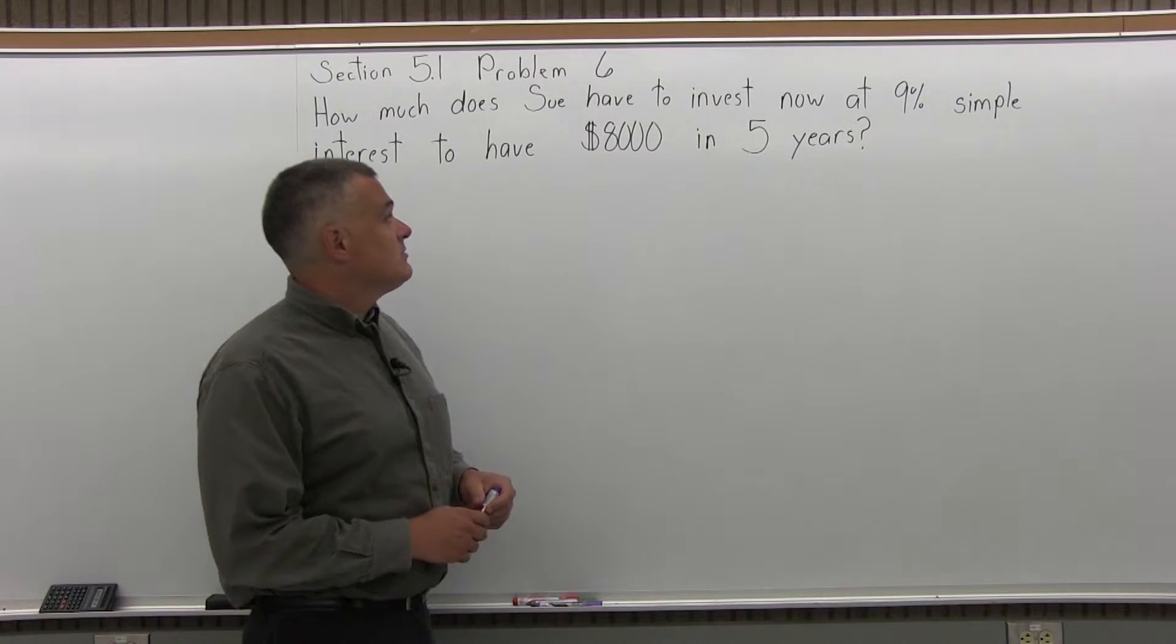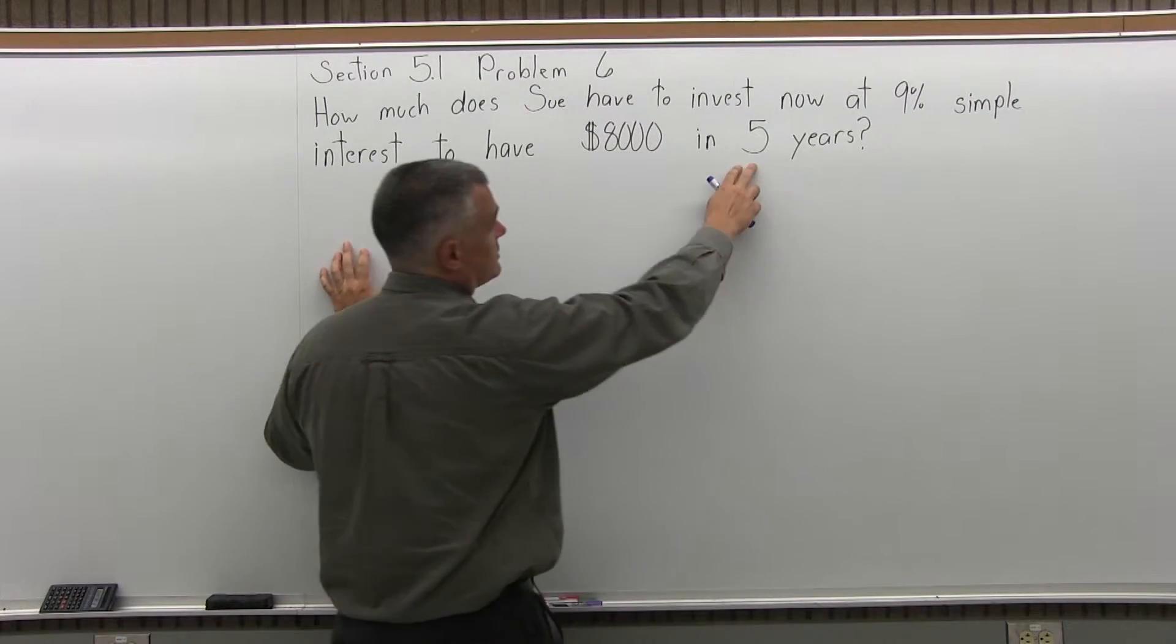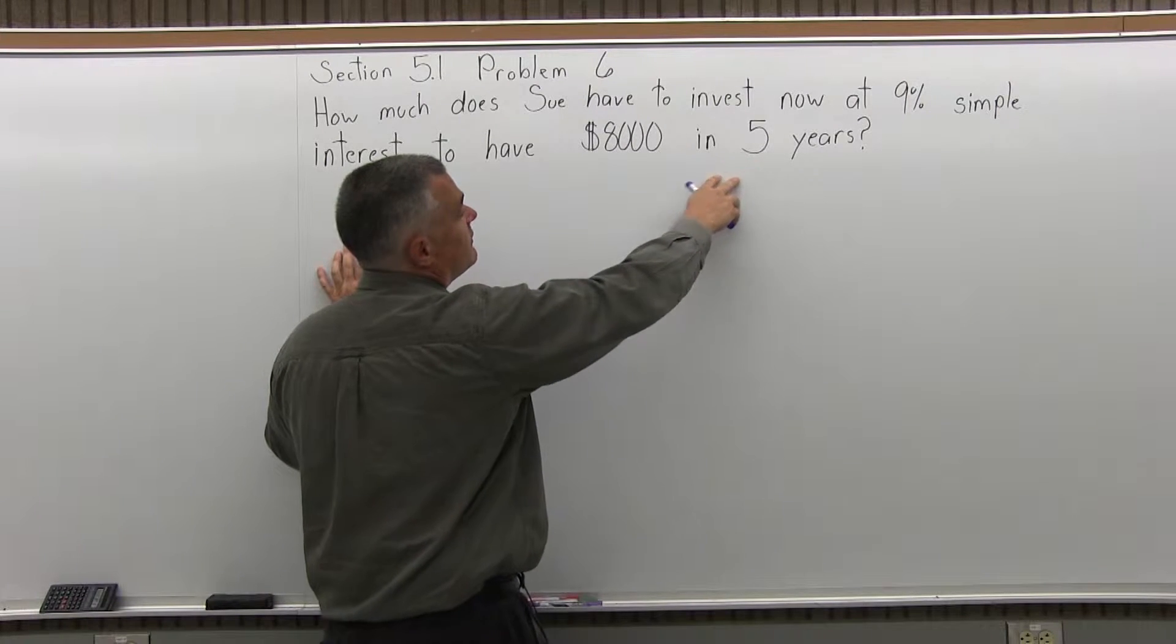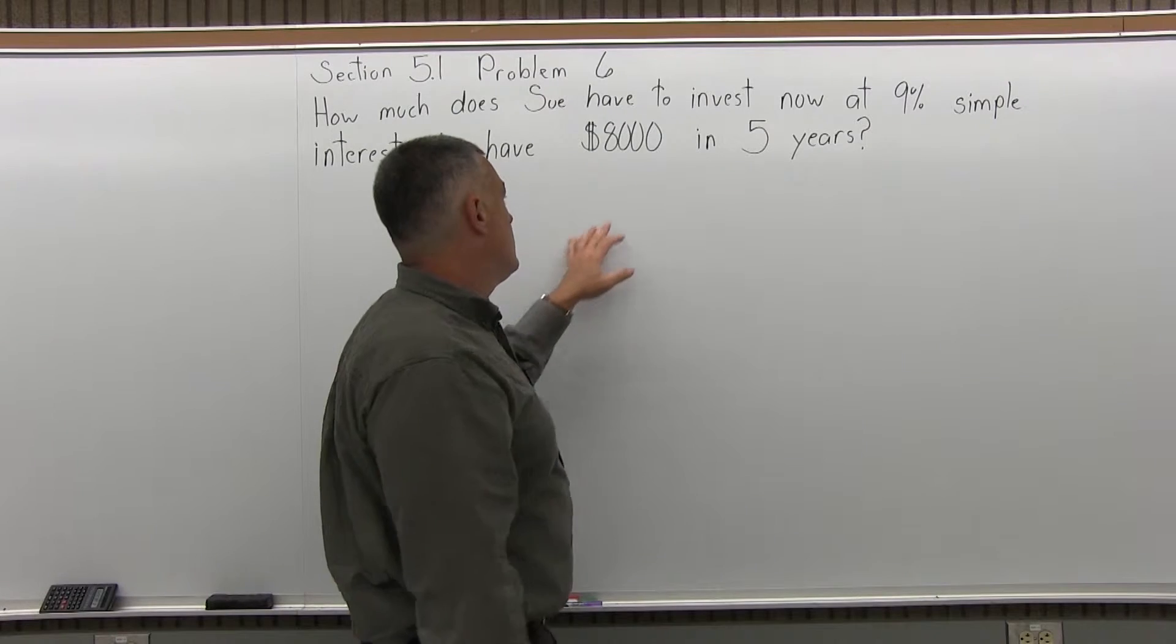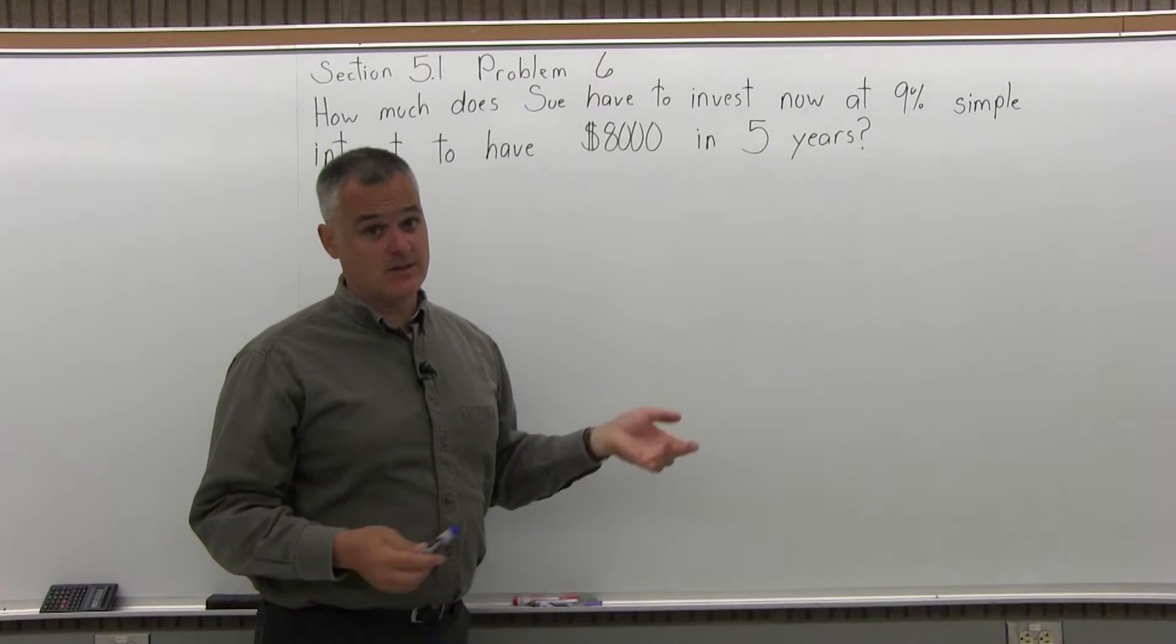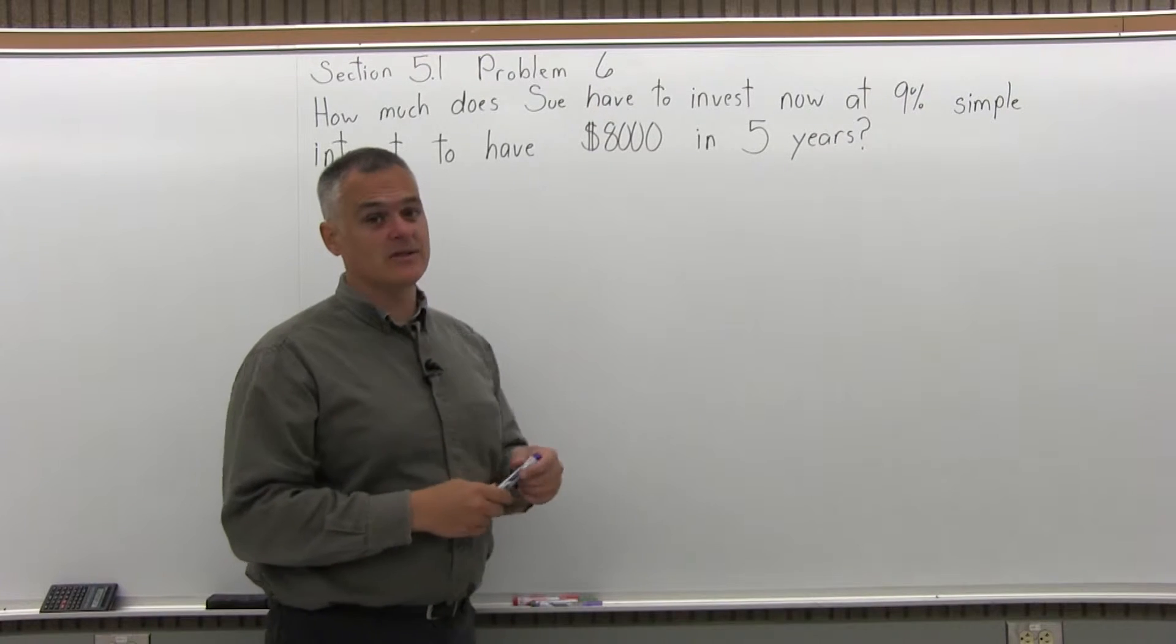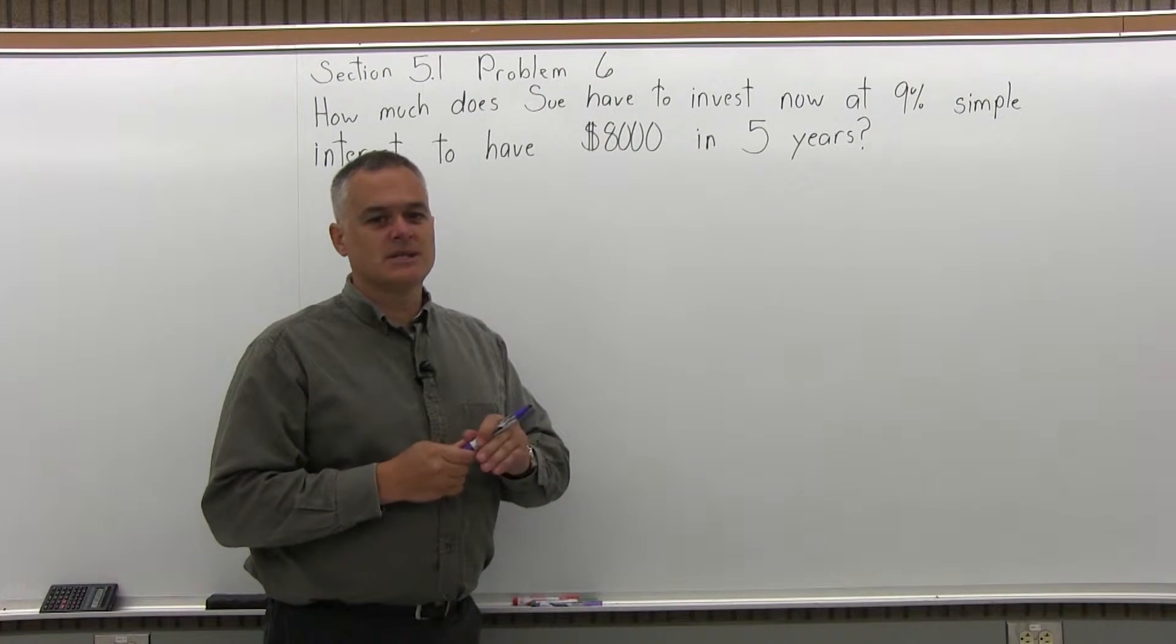So I'm going to use a simple interest formula because the problem mentions simple interest. And again, just using a little common sense, if you're going to have $8,000 at the end of the five years, you're going to have to invest somewhat less than $8,000 now. Say $5,000 or $6,000 and it's going to grow to $8,000. So a lot of these you can kind of apply some degree of common sense to make an estimate.